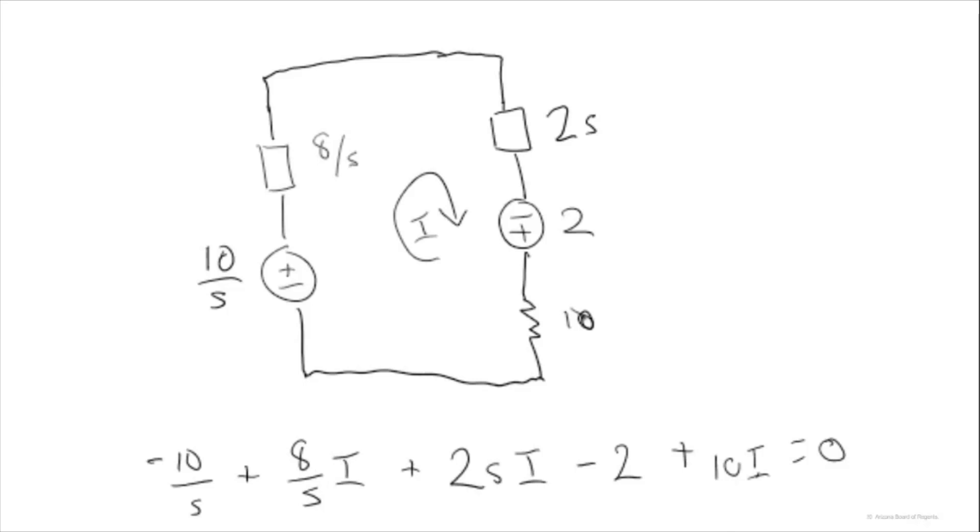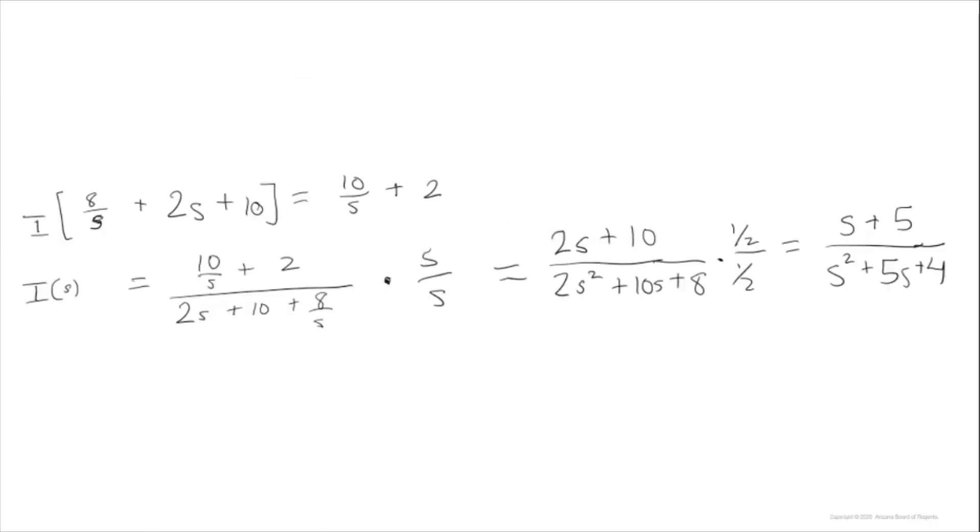Let's plug in the values we found earlier for VC of 0 and IL of 0 and write a KVL loop equation. We will collect like terms to isolate this big I. Big I is the current in the frequency domain or Laplace domain. Our goal is to solve for the current in the frequency domain and then perform an inverse Laplace transform to get the current in the time domain, which is what this problem is asking for.